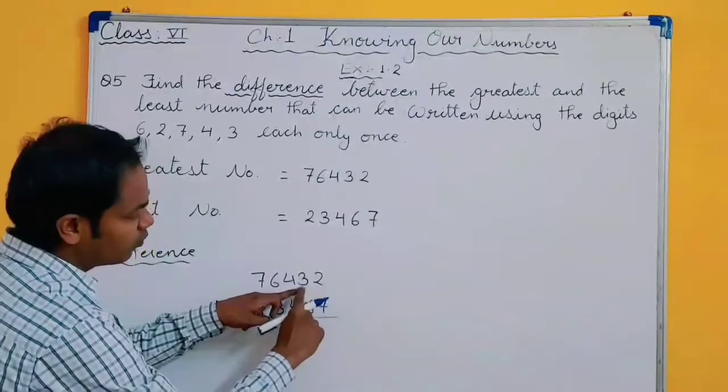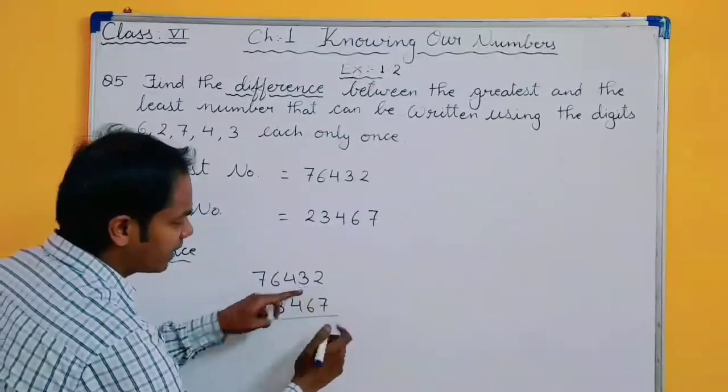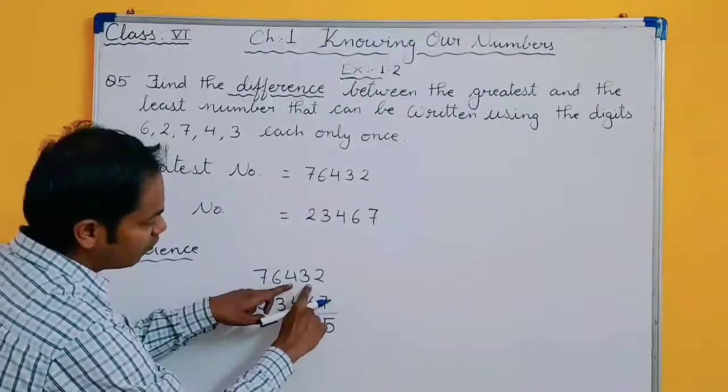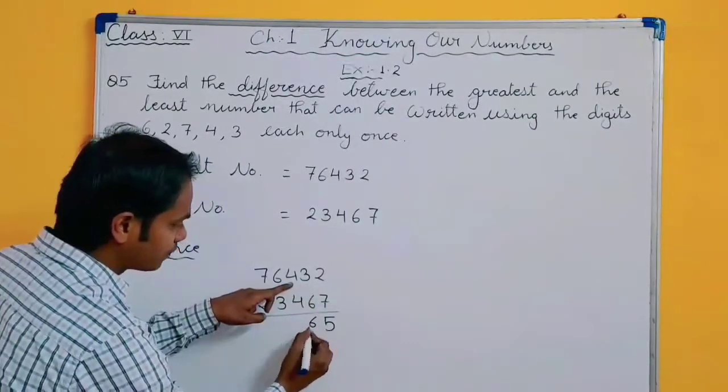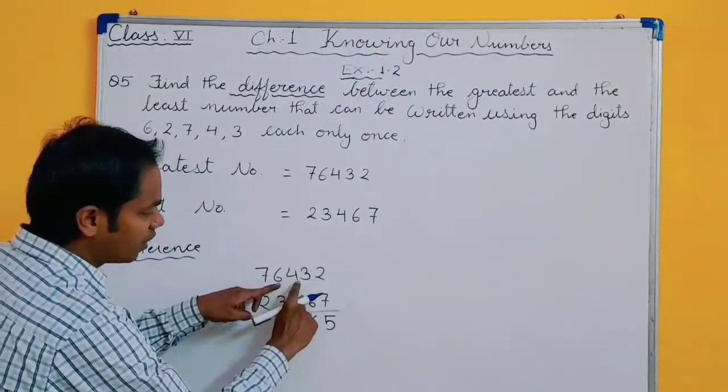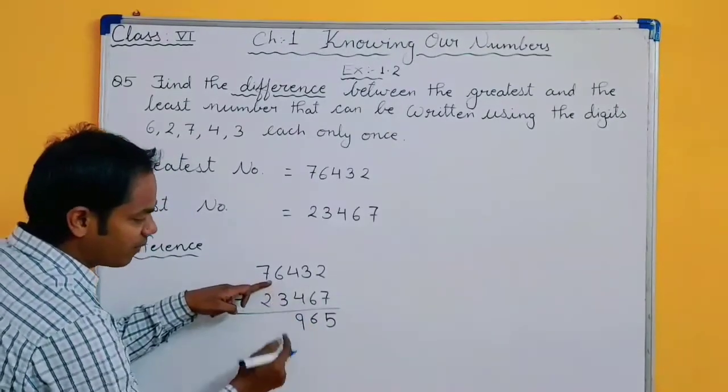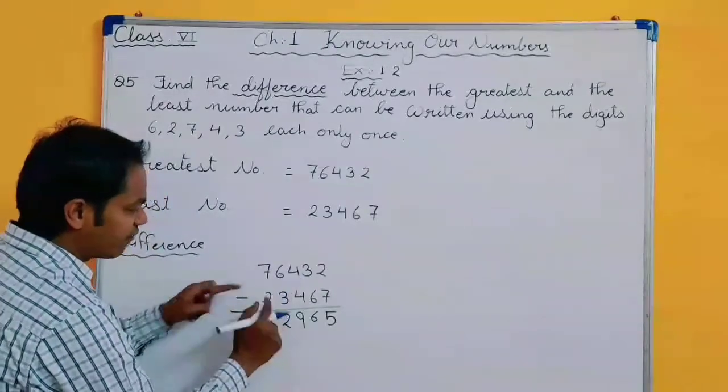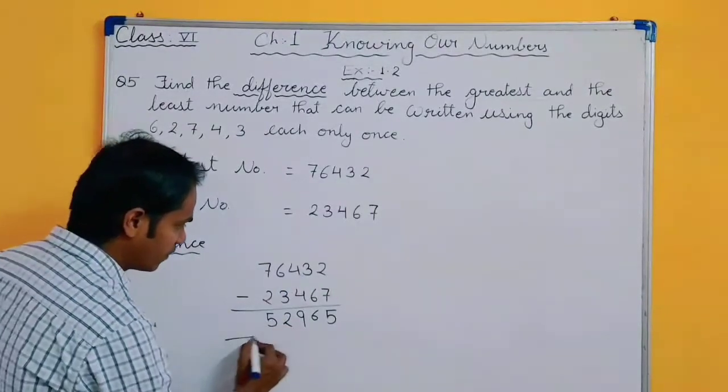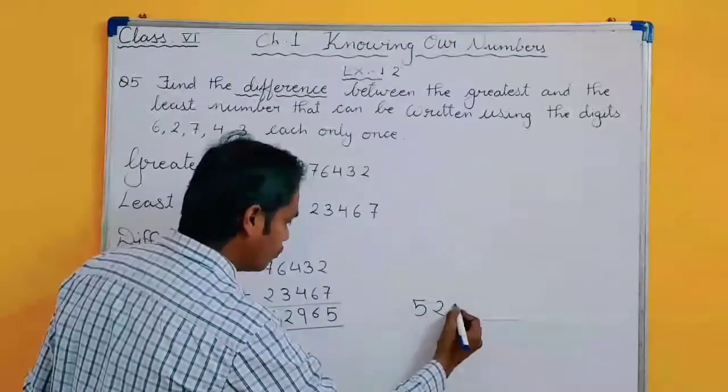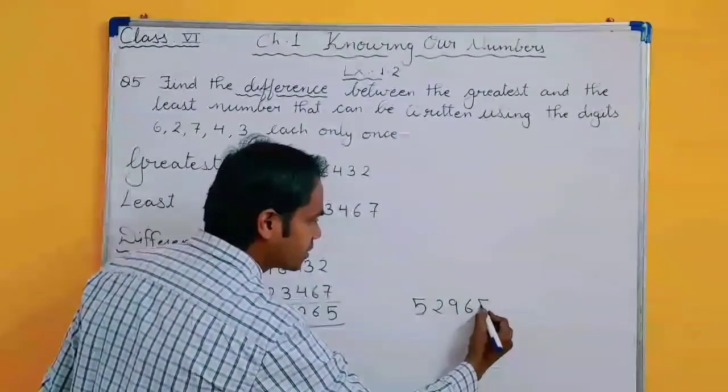You cannot subtract 7 from 2, so borrow 1. 12 minus 7, 5. This becomes 2. Again borrow 1, 12 minus 6, 6. Again borrow, 13 minus 4, 9. This becomes 5. 5 minus 3, 2 and 7 minus 2, 5. So your final answer is 52965.